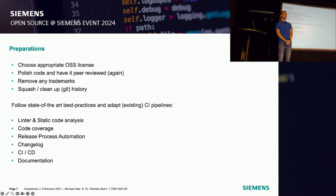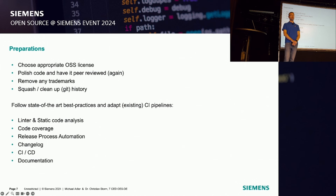So, you've decided to go open source — what are the preparations? In general, you need to find an OSS license. We chose Apache 2.0, but of course it has to make sense for the project. You might want to polish and have your code reviewed again. You have to remove any trademarks. You might want to clean up your Git history, or even squash it to start fresh again, which we did. And of course you might have to adjust your CI pipelines. In our case, we had to migrate from GitLab to GitHub Actions, which also takes a little bit of time and testing.